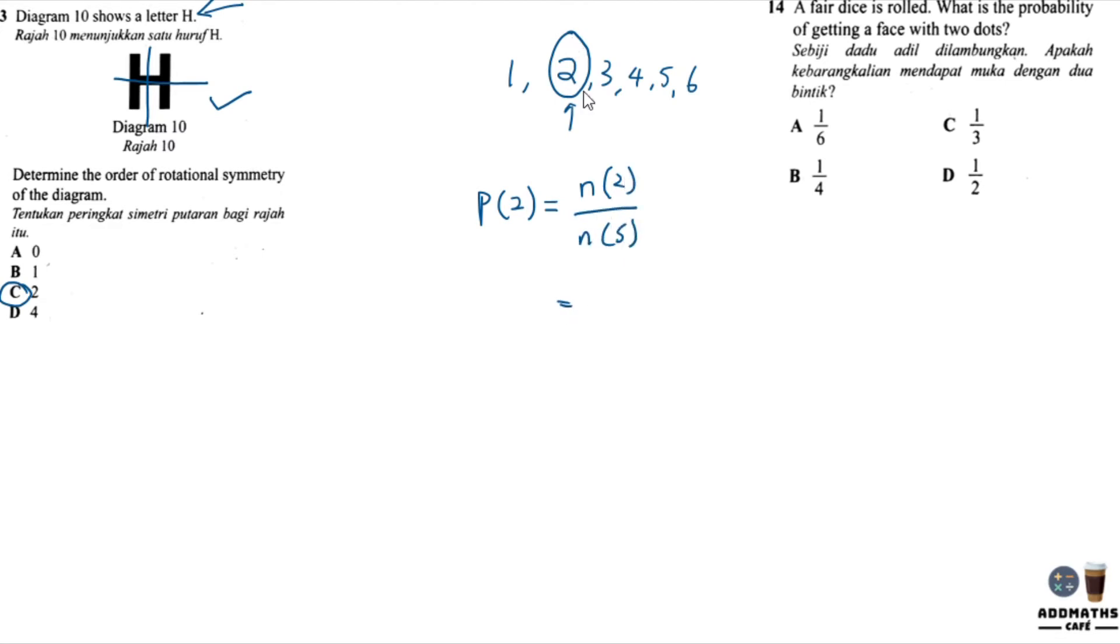So number of getting 2 is only one time. 1 divided by number of samples means how many results you can get from this fair dice. There are 6 results. So 1 divided by 6, the answer will be A.